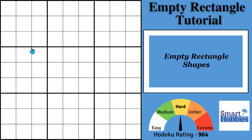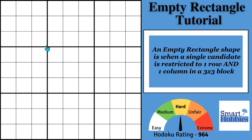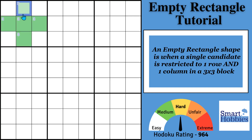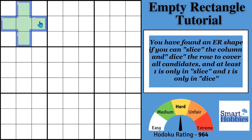Let's talk about the empty rectangle shapes. The hardest thing to see are these empty rectangle shapes. A definition of an empty rectangle shape is when a single candidate is restricted to exactly one row and one column in a block. The way you test to see if it's an empty rectangle shape — say it's a shape of threes — is what I call slice and dice. If you can slice down the row and eliminate all the candidates, and in each slice and dice you cover at least one of those candidates, you know you've found an empty rectangle shape.